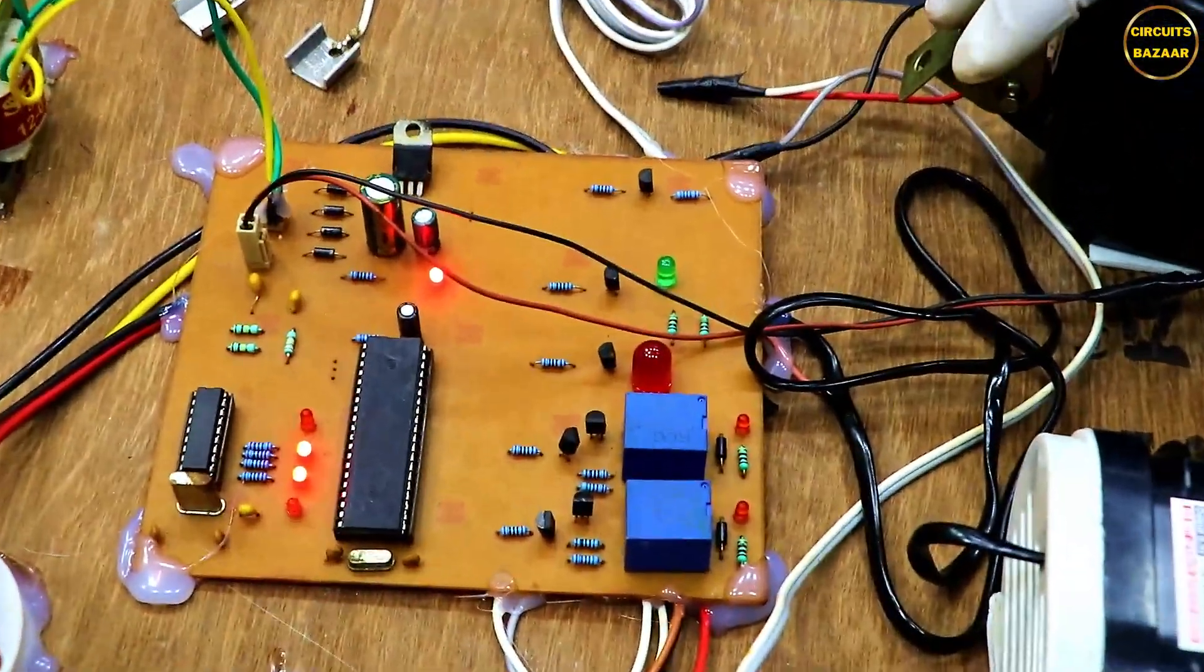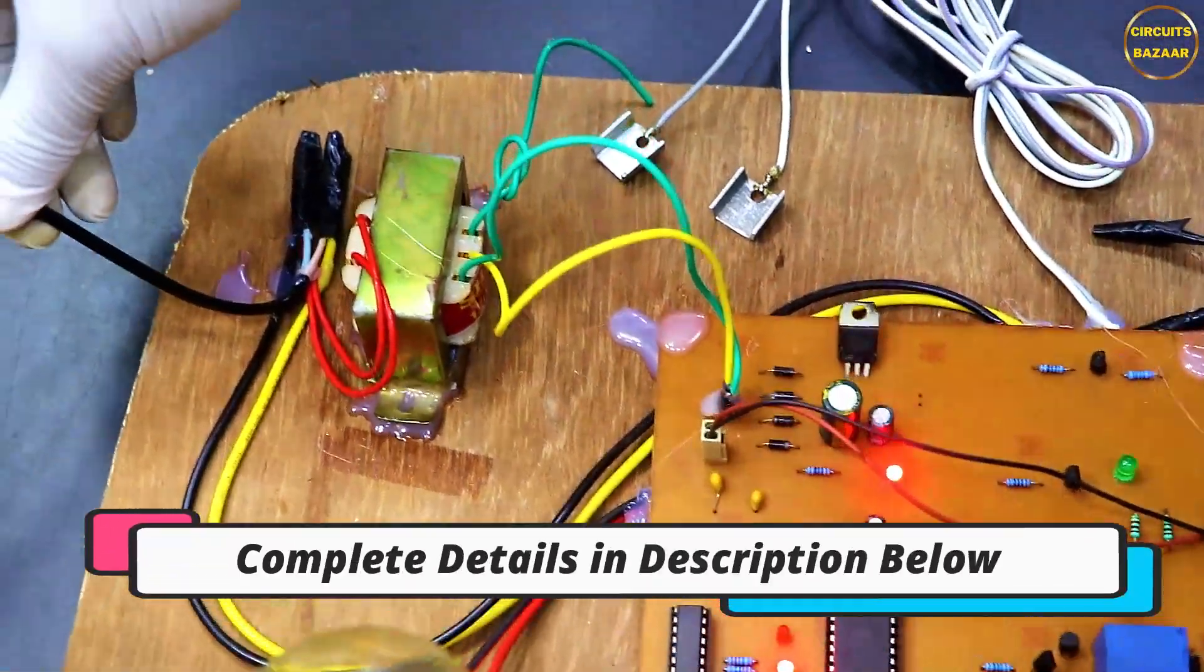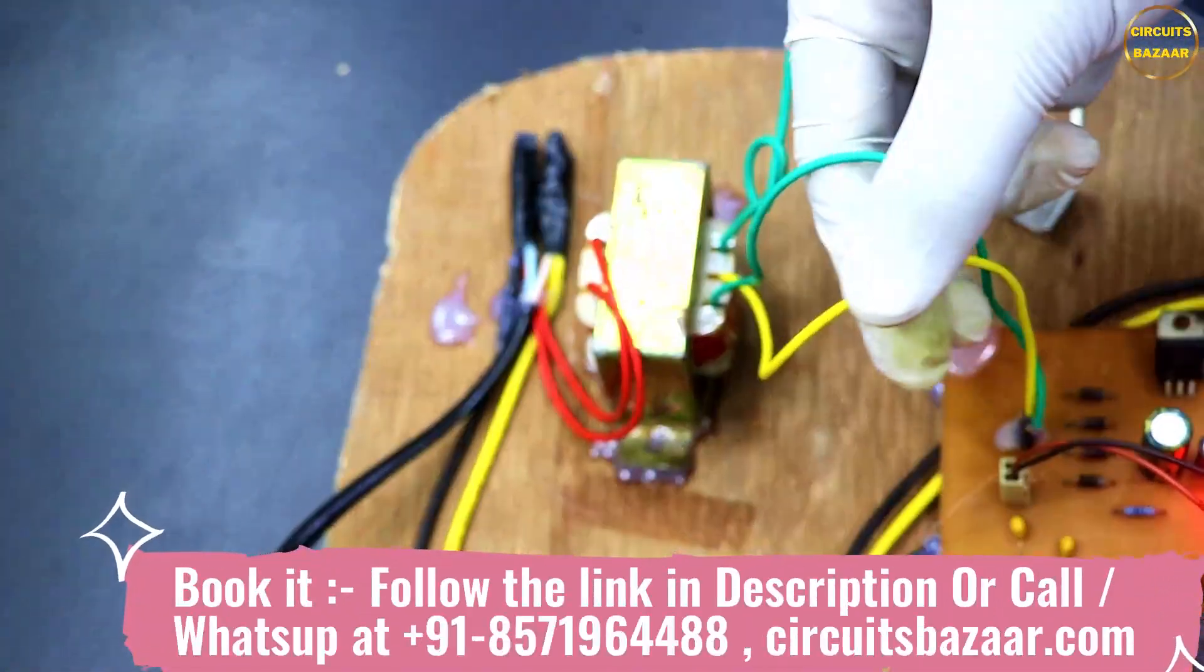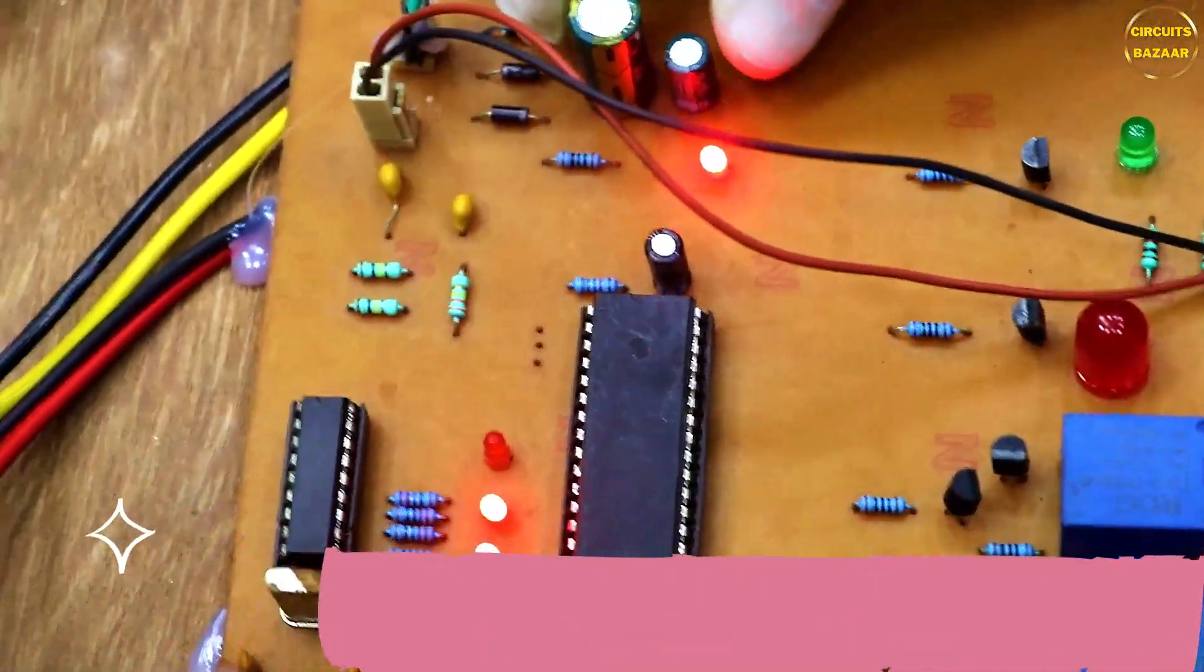If I talk about the technicalities of this project, the detail you can find in the description given below. You can go to the circuitsbazar website.com. This is a 230 volt cable and this is the transformer. This transformer is converting this 230 volt AC into 12 volt AC, and then there is a bridge wire rectifier. The bridge wire rectifier will convert 12 volt AC into 12 volt DC.